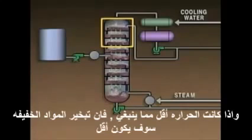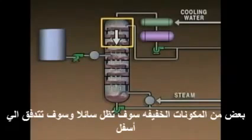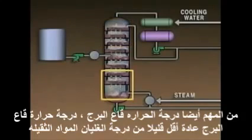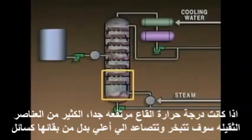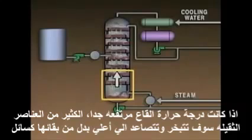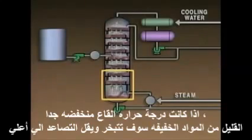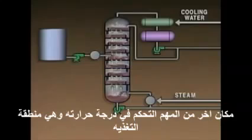If the temperature at the top of the tower is too low, less of the lighter components will vaporize — some will remain as liquid and flow down the tower. The temperature at the bottom of the tower is also important; it is usually slightly below the boiling point of the heavier component. If the bottom temperature is too high, more heavier components will vaporize and move up the tower instead of remaining as liquid. If the bottom temperature is too low, less of the lighter components will vaporize and move up the tower. Another important location for temperature control is the feed point.